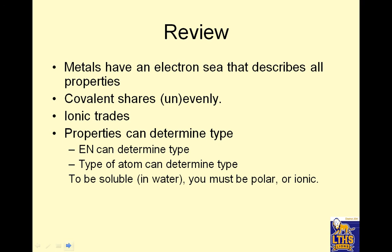So to review: metals have an electron sea that describes all of their properties. Covalent shares evenly or unevenly. Ionic transfers electrons. Properties, electronegativity, and type of atom can all determine the bond type. To be soluble in water, you must be polar or ionic. And that is it.